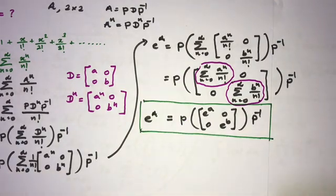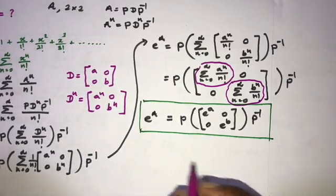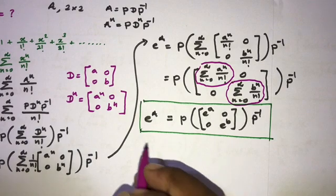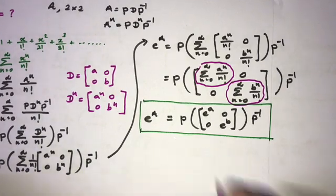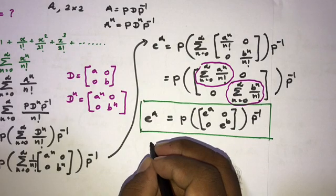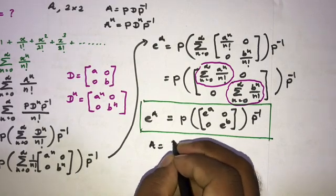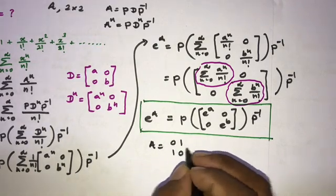Now we are going to take our example: e to the matrix [[0, 1], [1, 0]]. So let A equal [[0, 1], [1, 0]].